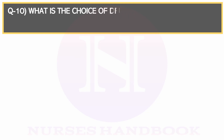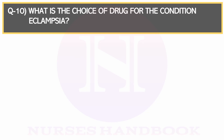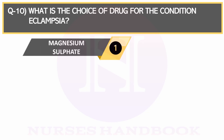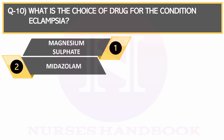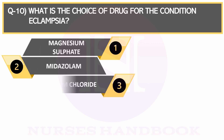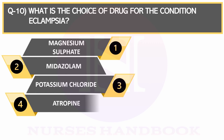Question number 10. What is the choice of drug for the condition eclampsia? Option 1: Magnesium sulfate, Option 2: Midazolam, Option 3: Potassium chloride, and Option 4: Atropine.